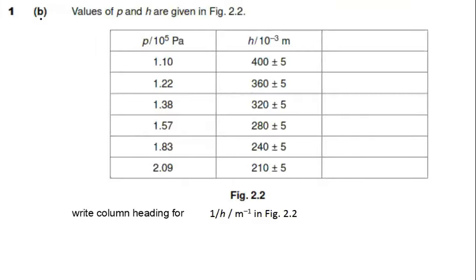Let's do the example from part B of the first graph question in the workbook. Part B asks us to write column headings for 1/H in units of per meter. The quantity is 1/H and the unit is m⁻¹, so the column heading should be written as: 1/H / m⁻¹. This brings our first lesson to an end. I'll see you in the next lesson soon — take care and stay blessed.